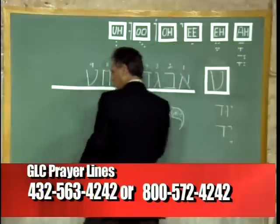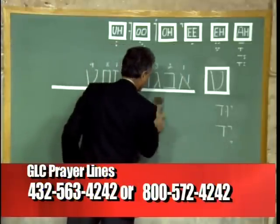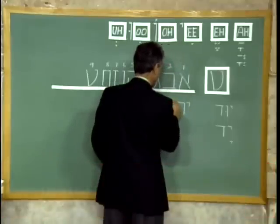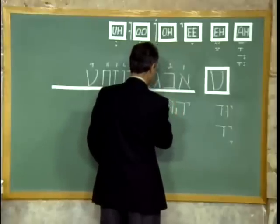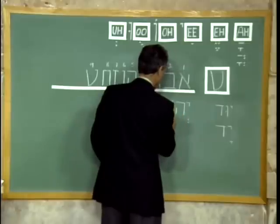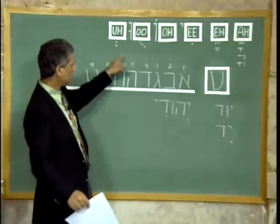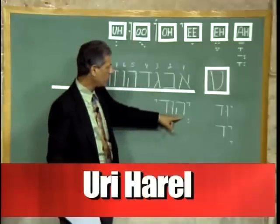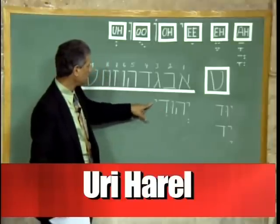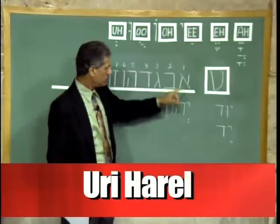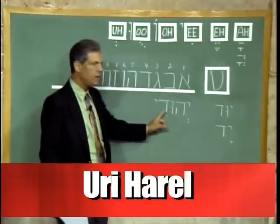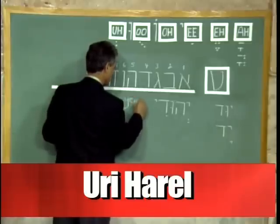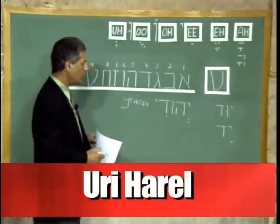Then we have words like — everybody knows these words, so let's use them. The word is Yud with an A sound — Ye — then He and a Vav and a dot in the middle, which is a U sound — Ye-Hu — and then a Dalet, a dot underneath and a Yud next to it, which is an E sound. So we read it Ye-Hu-Di. Yehudi means Jewish.